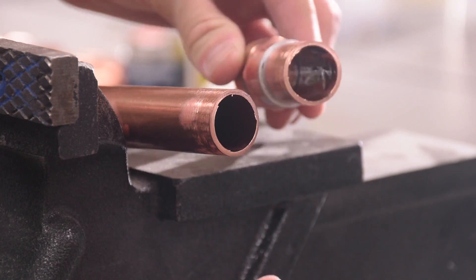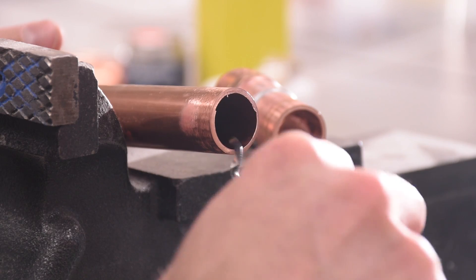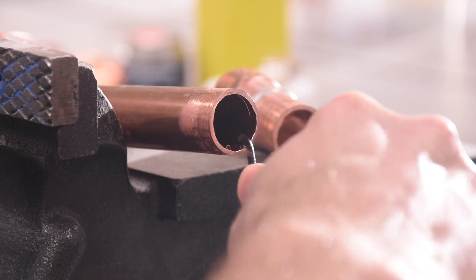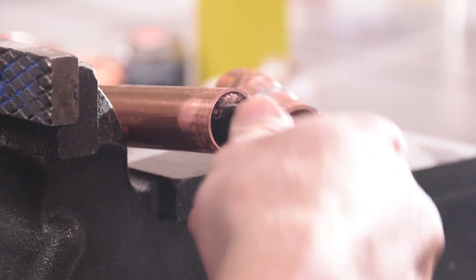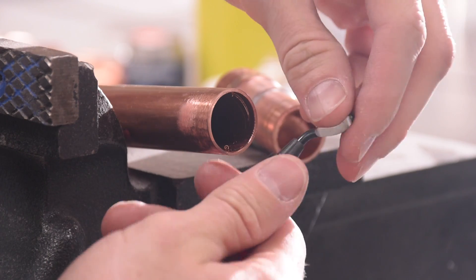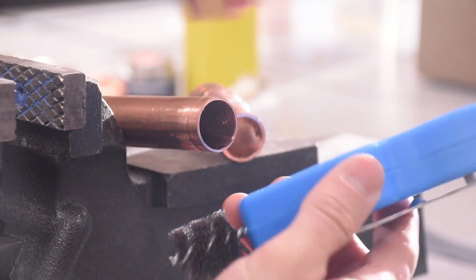So once you cut your tubing it'll have burrs inside that you'll need to get rid of. For that I like to use this style of deburring tool. It's got a hooked blade that you just run around the inside of a pipe a couple of times to smooth the edges. Your pipe brush might have a deburring plate like this one does and you could just use that to deburr as you brush your pipe. But I like the deburring tool better.